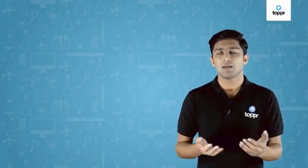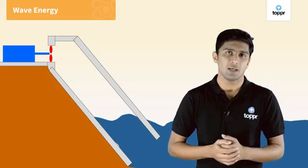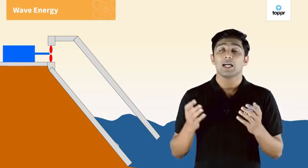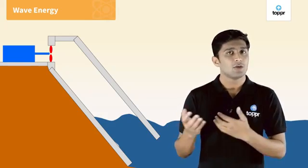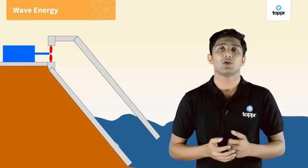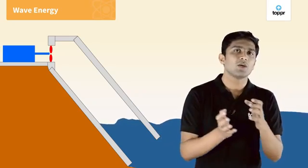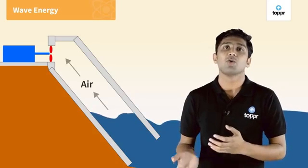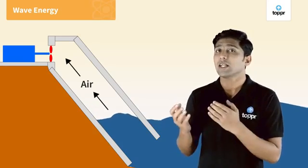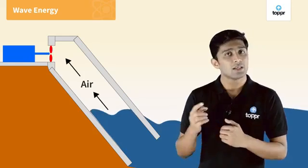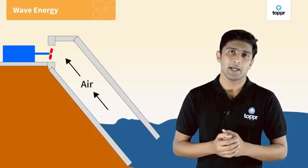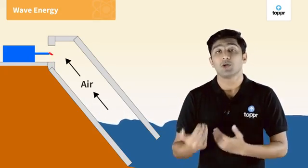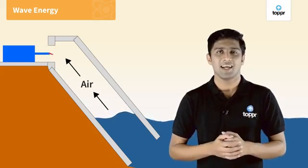Another method of using energy from the sea is wave energy. Waves are a good source of energy, and many devices have been designed and tested to produce wave energy. For example, a hollow tower — when water gushes into the tube because of the wave, it forces air to move upwards. The kinetic energy of the air moving upward is used to run a turbine. When the wave goes down, the air also goes down, which is also used to run the turbine and generate electricity.